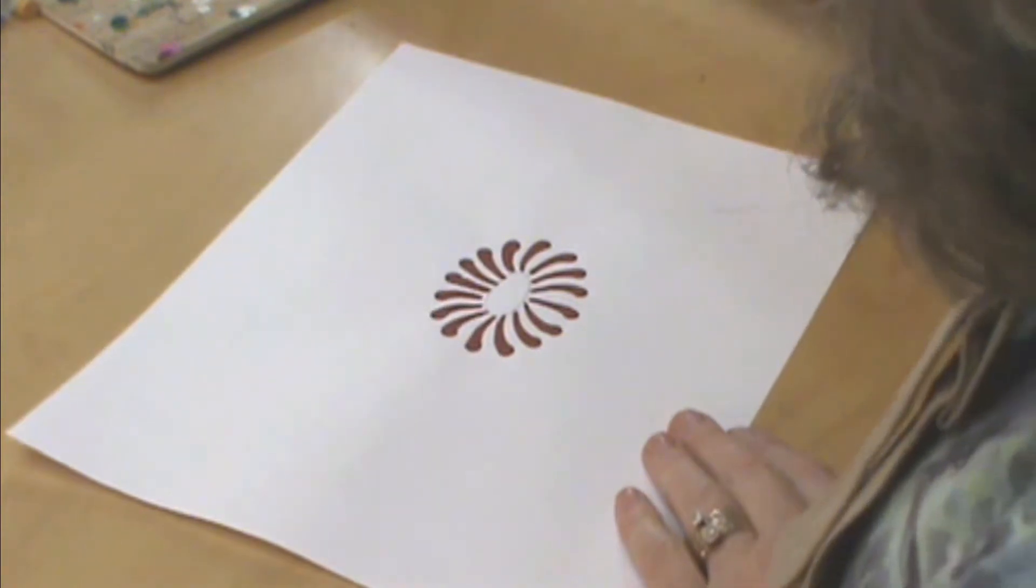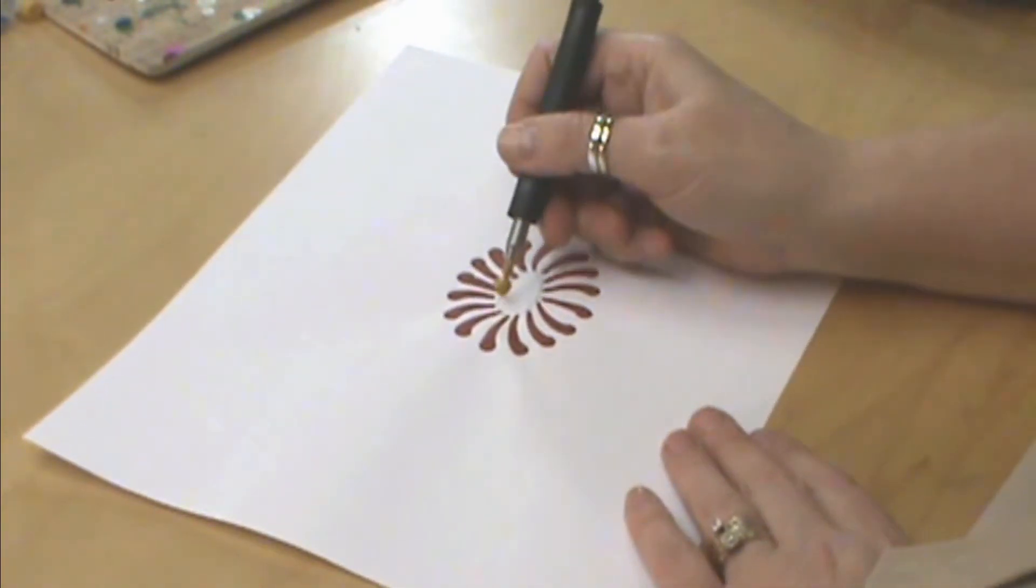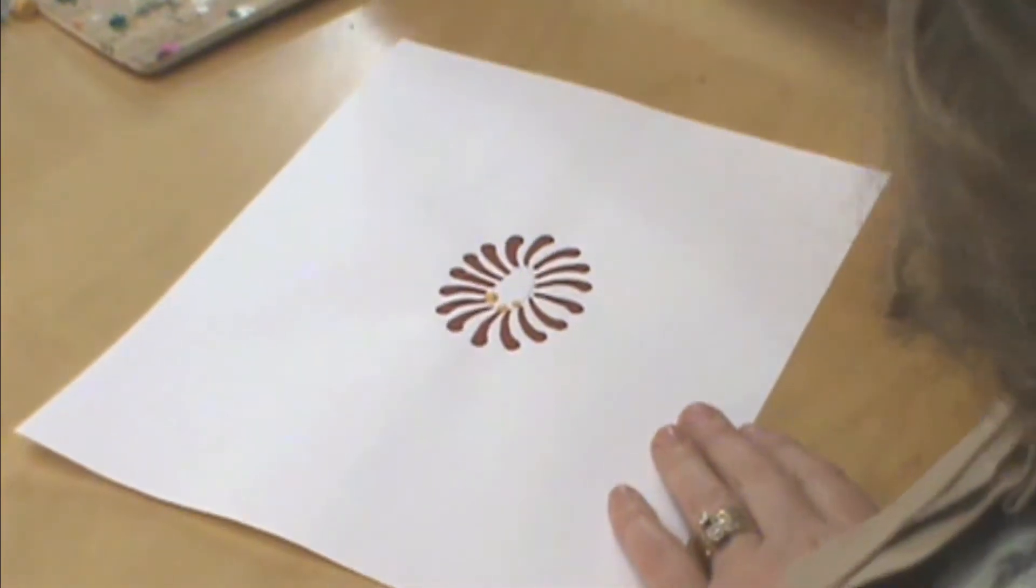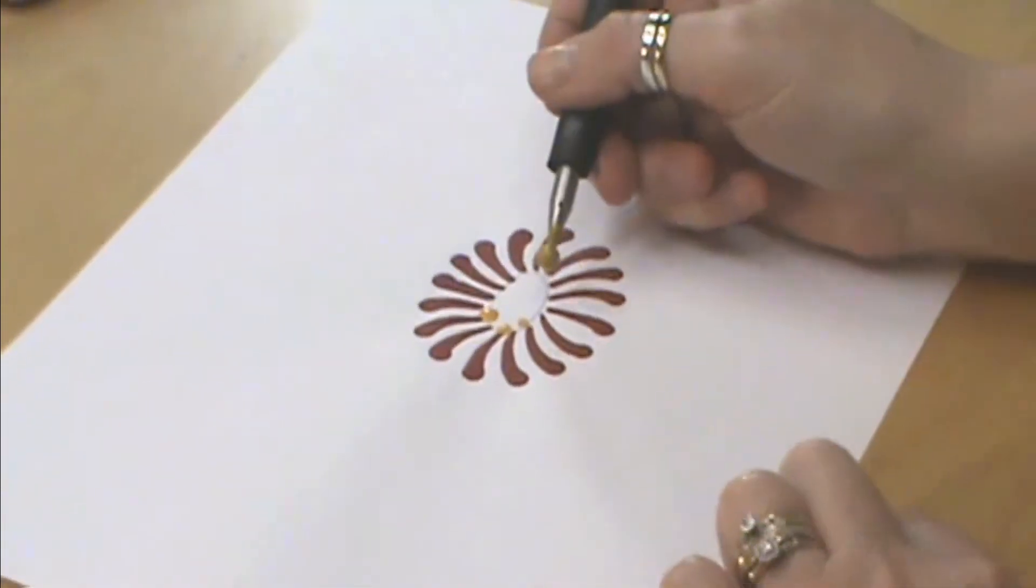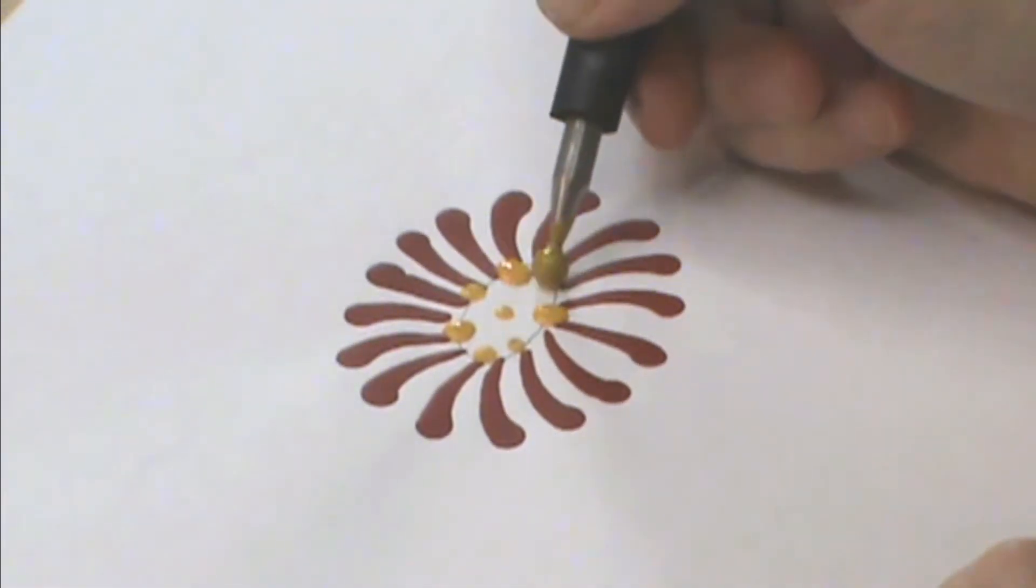We're going to go ahead and put dots in the center, and we're going to do descending dots. When you're doing descending dots, I'm going to start them on the outside of the petals, just a little bit up in them, but don't let your dots touch.